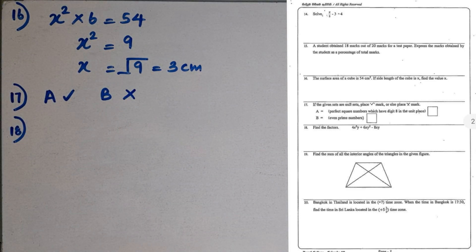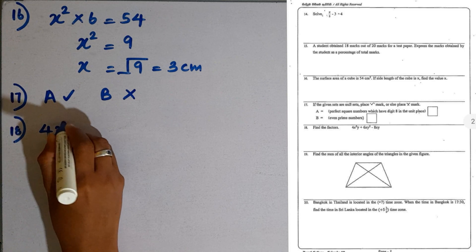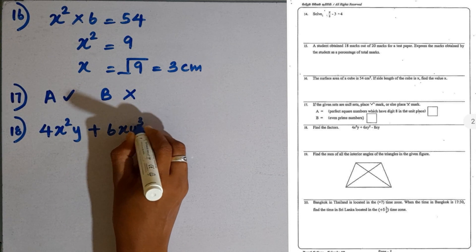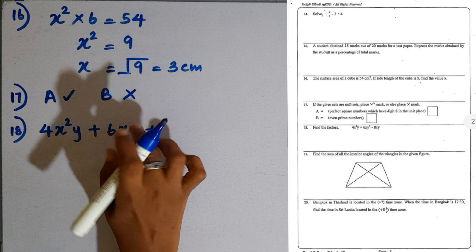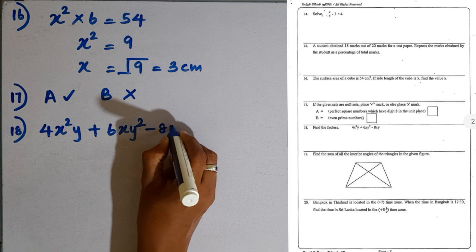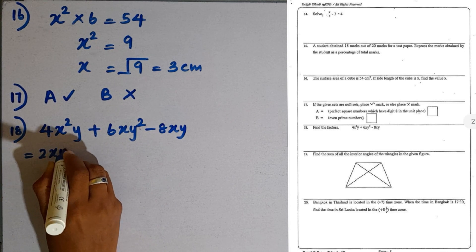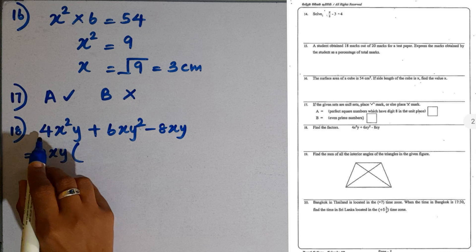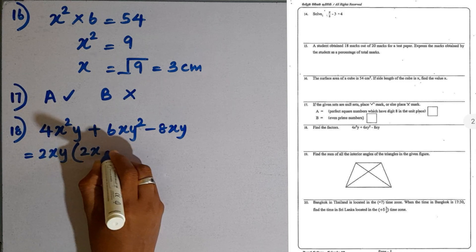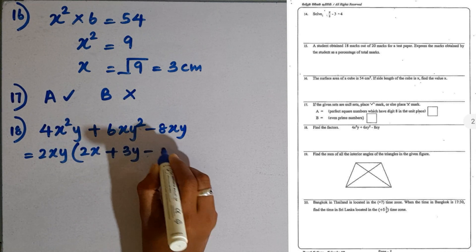Question number 18. Find the factors. We are given 4X squared Y plus 6XY cubed minus 8XY. What are the common factors we can take out? 2 is common, X is common, Y is common. If you divide this expression by 2XY, you get 2XY in brackets. Inside the brackets, you get 2X, then 3Y squared, then minus 4.